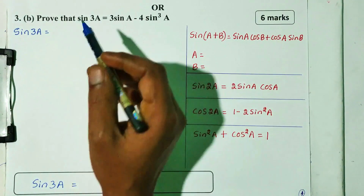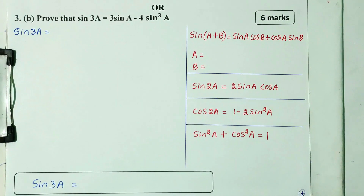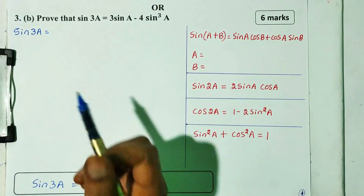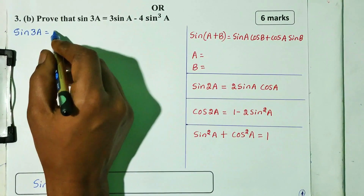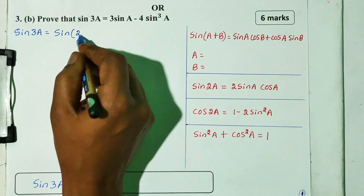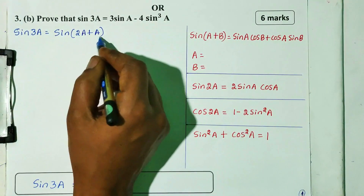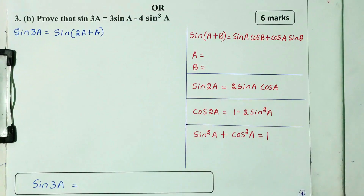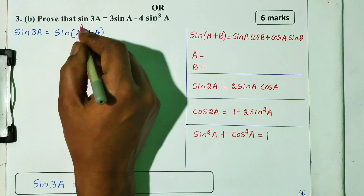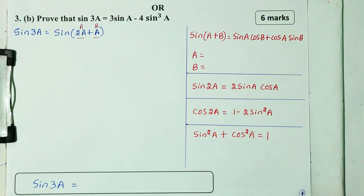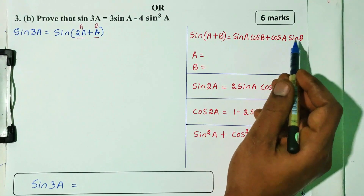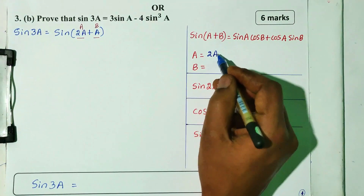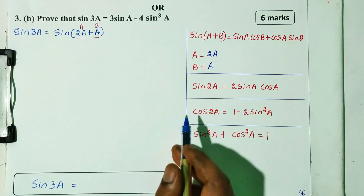Question number 3b: prove that sin 3A is equal to 3 sin A minus 4 sin cube A. First, take the left-hand side: sin 3A. Sin 3A is equal to sin of 2A plus A. Apply the sin A plus B formula. Here, A is 2A and B is A.